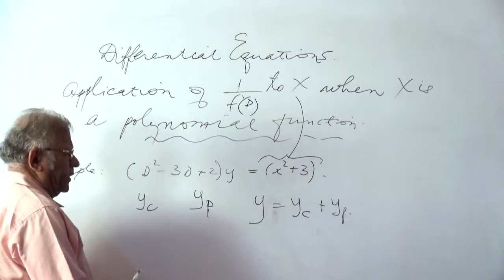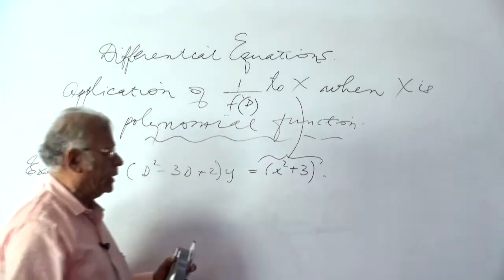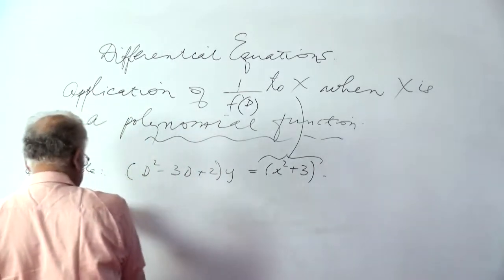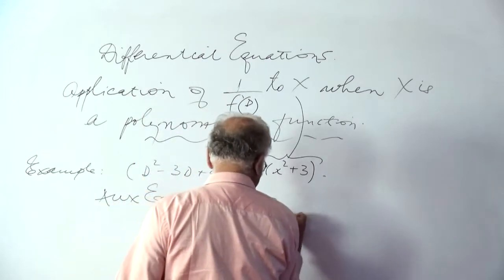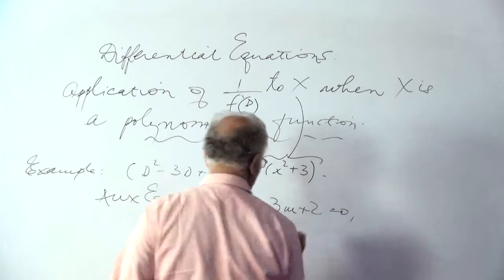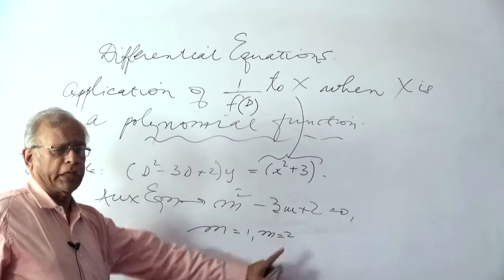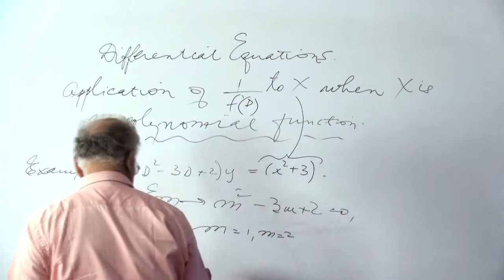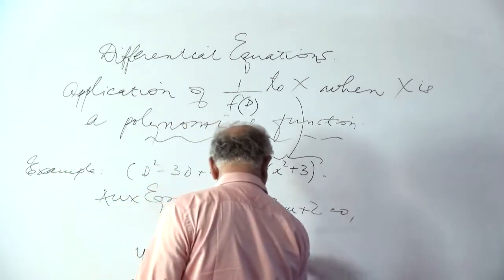The complementary function is very easy to write. It results by setting the right-hand side to 0, giving the auxiliary equation m squared minus 3m plus 2 equals 0, whose roots are m equals 1 and m equals 2. Since these two roots are distinct and real, the complementary function is c1 e to the power x plus c2 e to the power 2x.